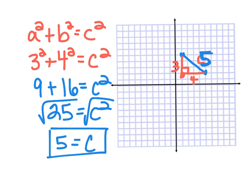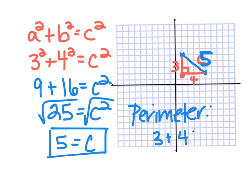Now I might ask another question: can you find the perimeter of this triangle? Perimeter means going around the outside. The three sides are three, four, and five, so I add three plus four plus five. Four plus five is nine, plus three is 12. The perimeter is 12 units.